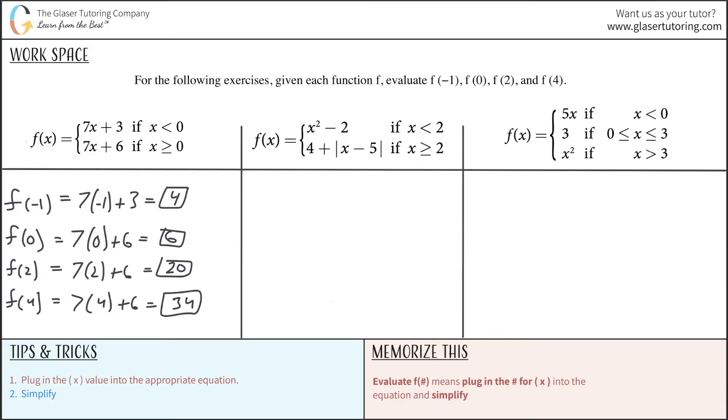Now let's take a look at the second one. Same exact thing. So now f of negative 1. Where does negative 1 fall within these constraints? It falls under the first constraint where x is less than 2, so you're going to be using this equation. Plug in negative 1 for your x value, so this is negative 1 squared minus 2. And negative 1 times a negative 1 is positive 1. Positive 1 minus 2 then is going to be a negative 1.